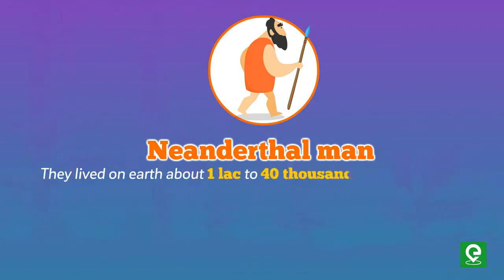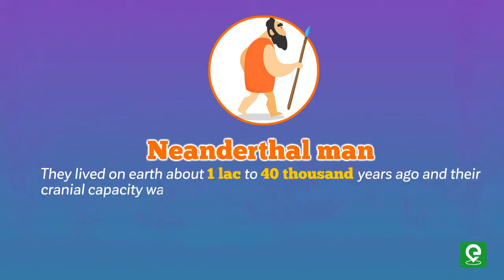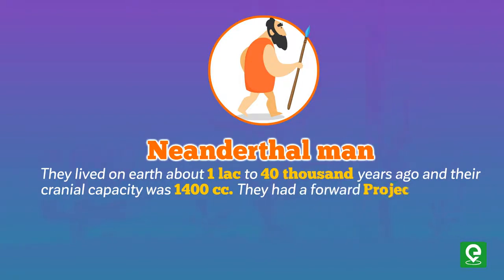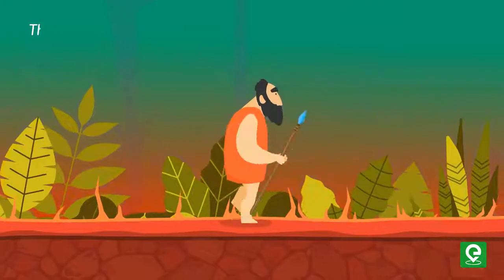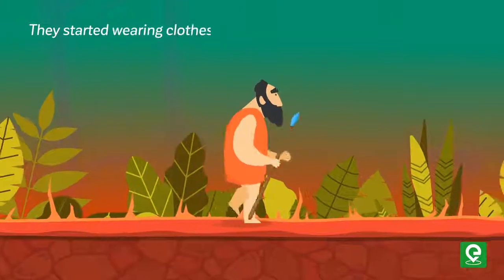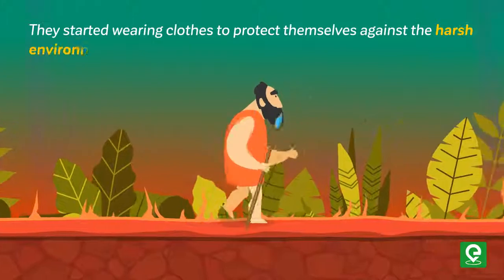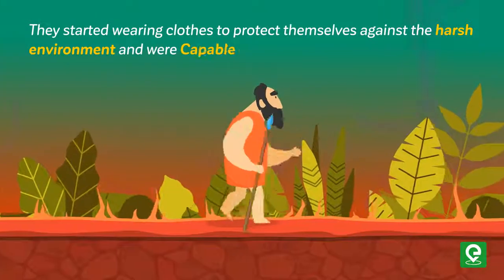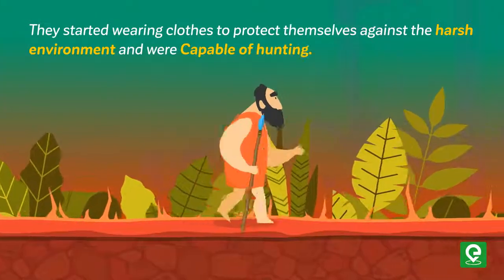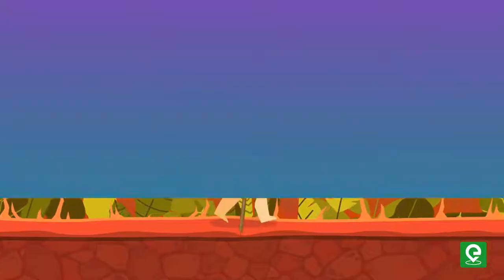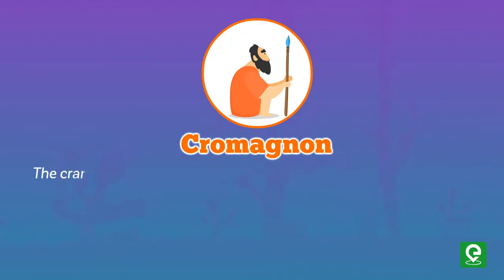Neanderthal man lived on Earth about 1 lakh to 40,000 years ago. Their cranial capacity was 1400 CC. They had a forward-projecting face. They started wearing clothes to protect themselves against the harsh environment and were capable of hunting.